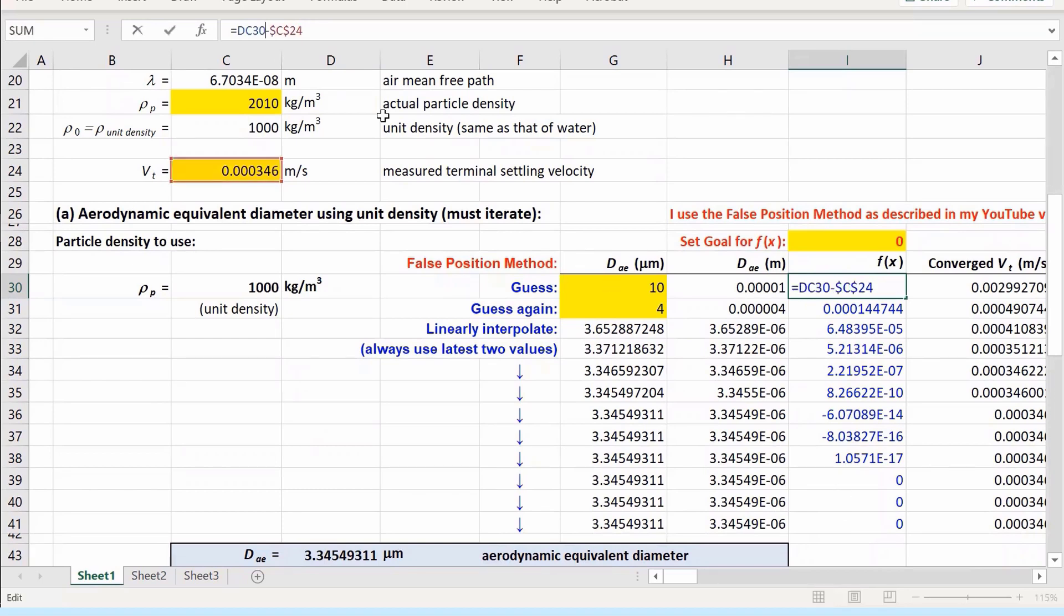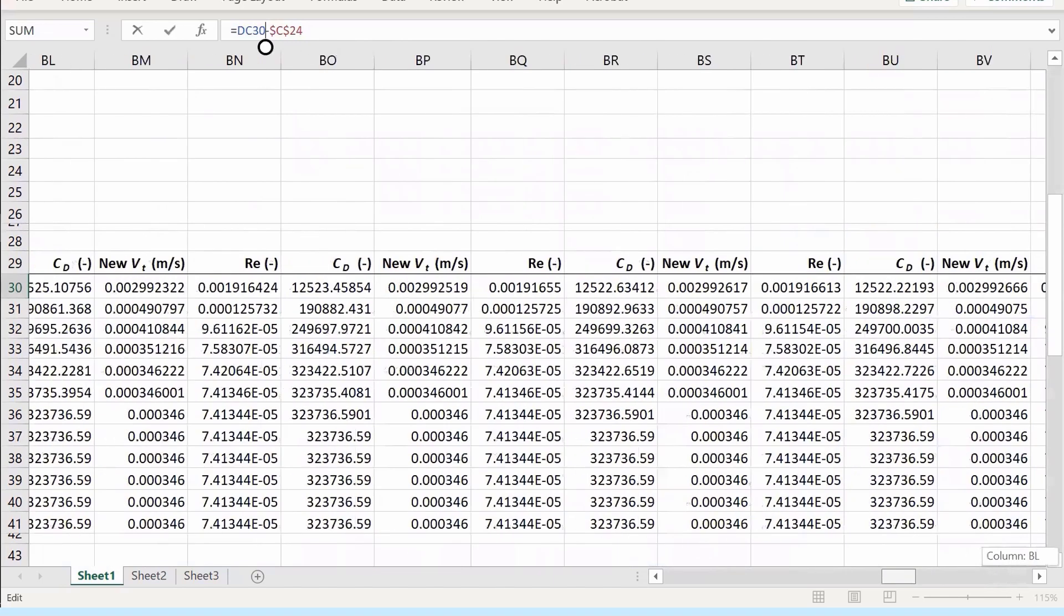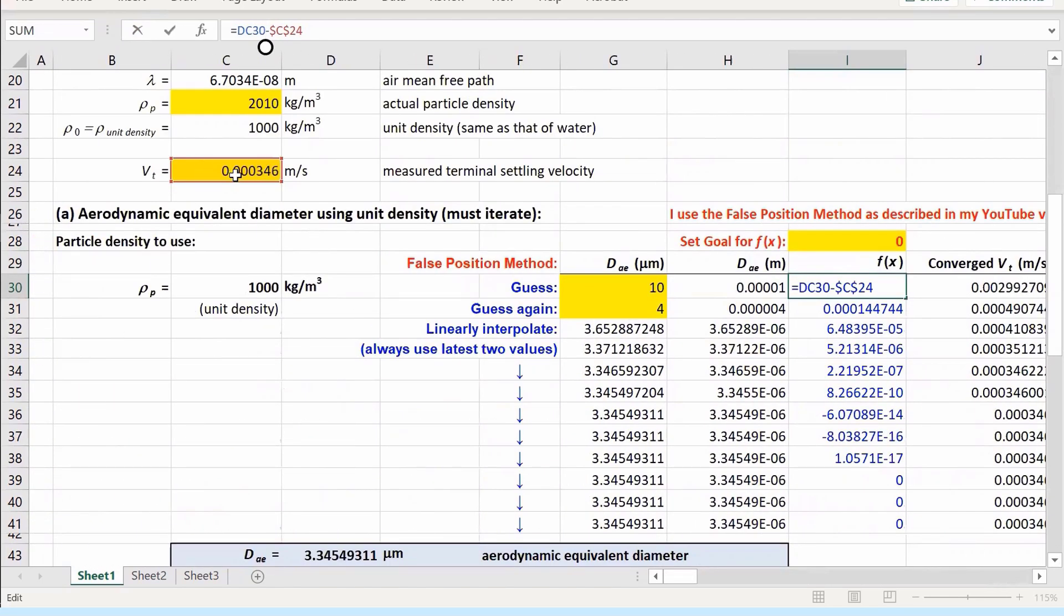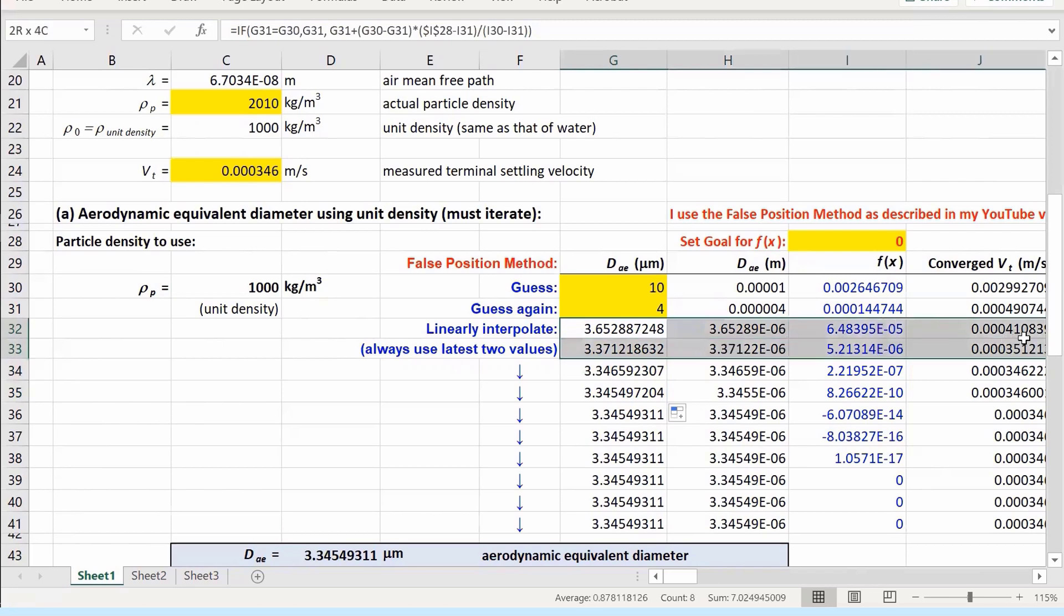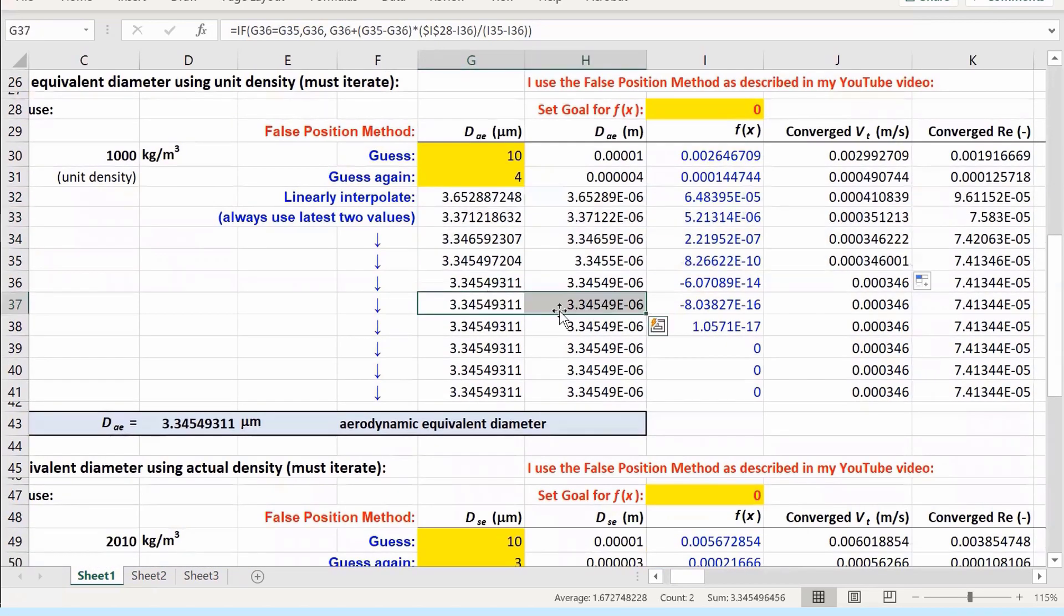Now in this false position method, it's best to set your goal for f(x) as zero, so it's easy to tell when you have converged. What is f(x)? Well, I'm trying to find dₐₑ. So if I click here, what I'm trying to do is get dc30. So what's dc30? We have to go all the way across to dc. So it's this final vₜ that I'm calculating through all this iteration process, minus c24 in dollars. So that's this measured settling speed. So when these two are equal, f(x) will be zero. And of course, it's not zero at first because I just have these guesses. So I make two guesses, and then this is just a linear interpolation. You can see the equation up here. There's linear interpolation so that I can predict a new dₐₑ based on these two guesses and the f(x)'s. I explain that in more detail in my tutorial video about false position method. But as you can see, then I just copy and paste this down like this and these other rows.